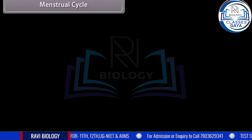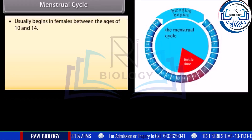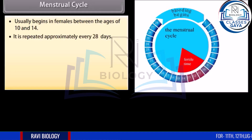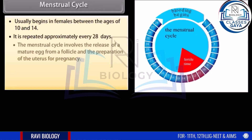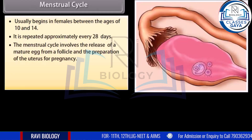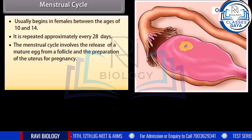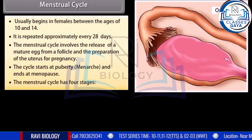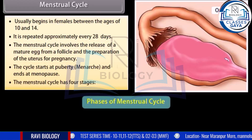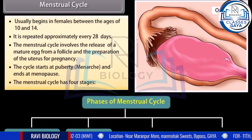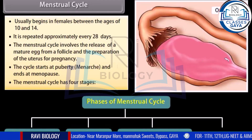The menstrual cycle usually begins in females between the age of 10 and 14, and is repeated approximately every 28 days. It involves the release of a mature egg from a follicle and the preparation of the uterus for pregnancy. The cycle starts at puberty or menarche and ends at menopause. The menstrual cycle has four phases: the follicle phase, ovulation, corpus luteum phase, and menstruation.